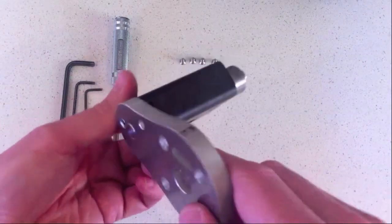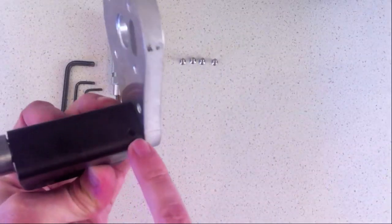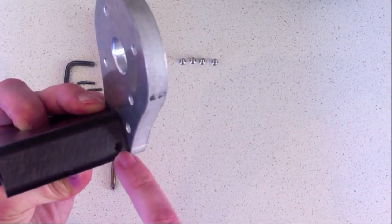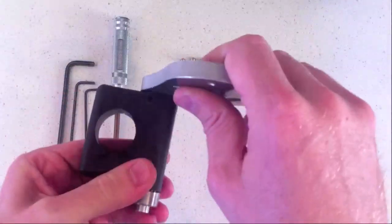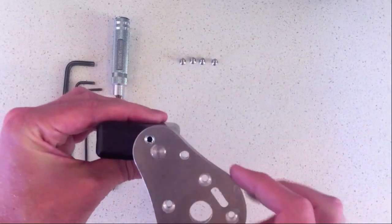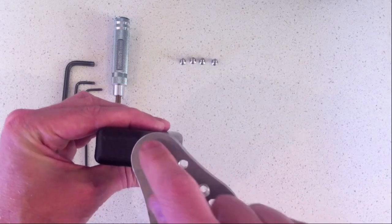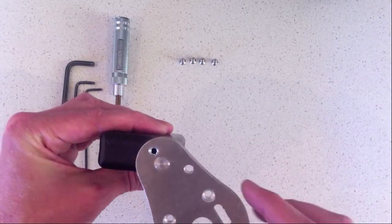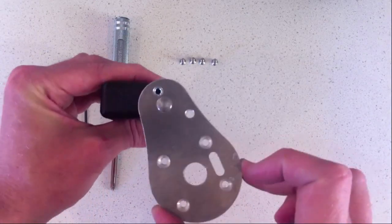There's also two small allen key grub screws. There's one here, and there's one under here. These adjust the dead stops for the swing arm. So this pin here is what limits the range of motion of the swing arm.